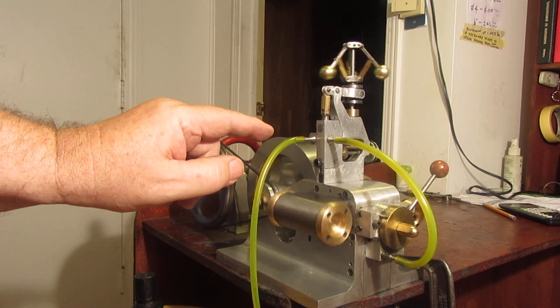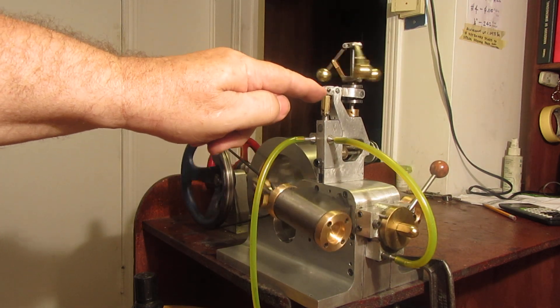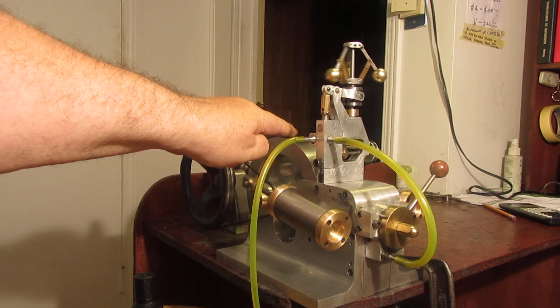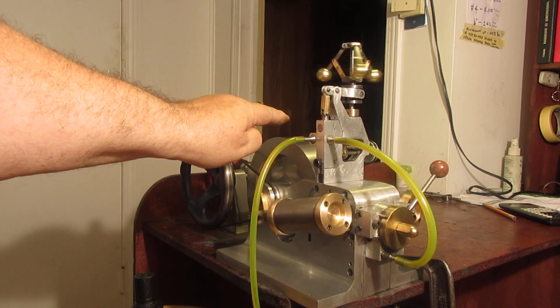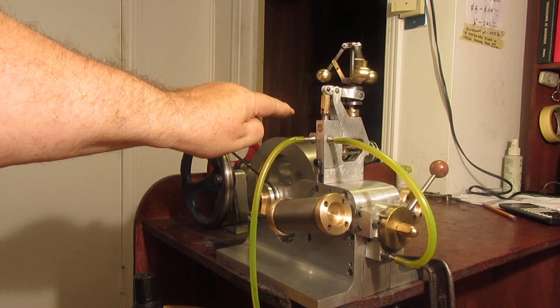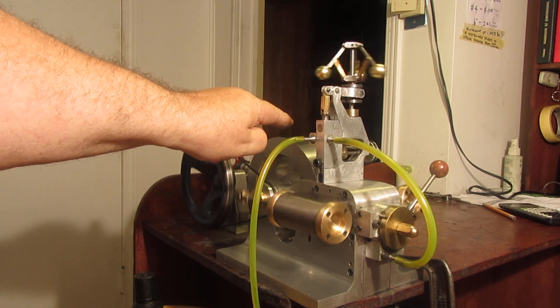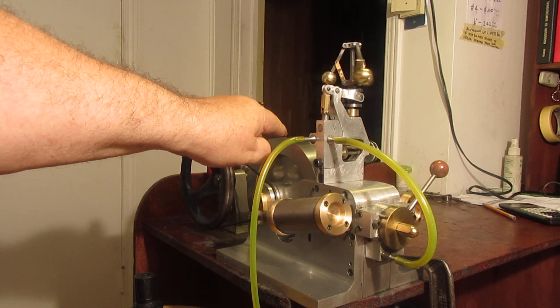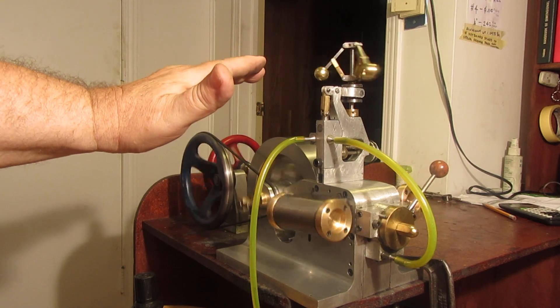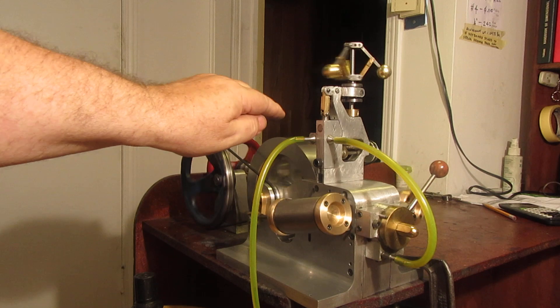Now I'm going to put a load on the engine, and when I do you'll see the flyball governor react to it and try to allow more steam through to maintain the engine speed. You see how the lever moves and how the steam valve moves? Now not only does it try and maintain engine speed when the load is put on it, but as soon as the load is taken off it maintains the engine speed by lowering the amount of steam or air that can flow through here.